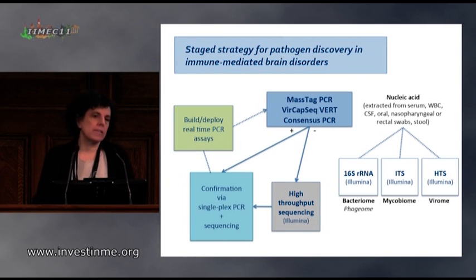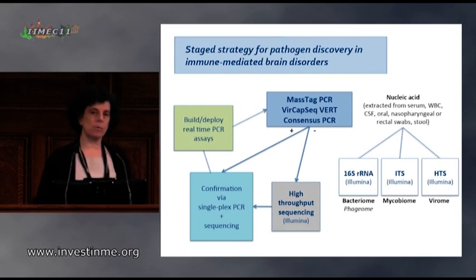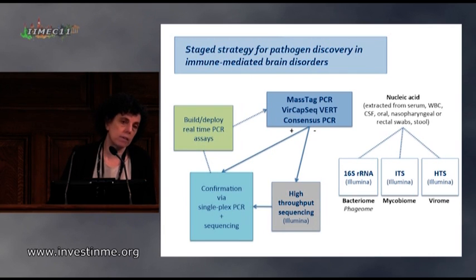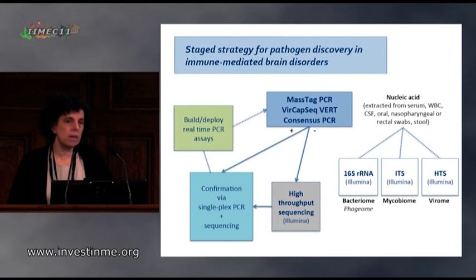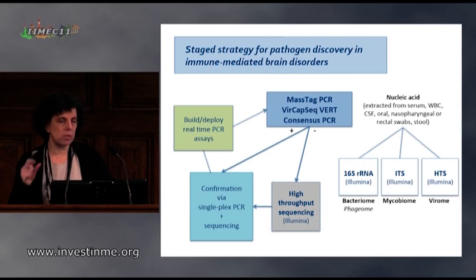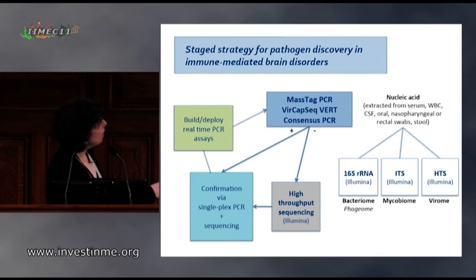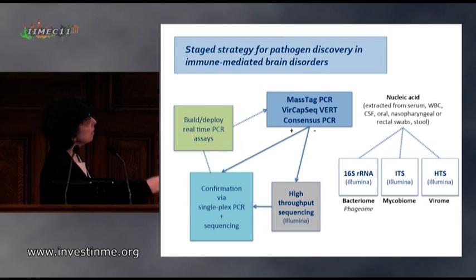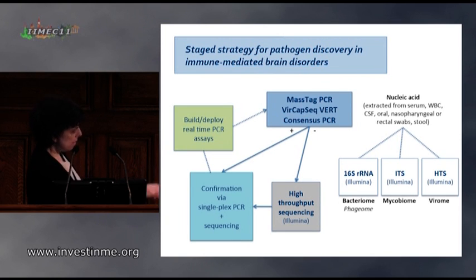Our approach could be called a staged strategy — looking at low-hanging fruit first using targeted techniques to find pathogens we know exist. Newest on the platter is the VRCAP-Seq-VERT, a molecular technique we published about last year that can detect every vertebrate virus whose sequence has been deposited in GenBank. It's very powerful and highly sensitive — for some viruses more sensitive than PCR. We also use high-throughput sequencing, and studies for bacteria, microbiome, mycobiome (fungi), and virome.